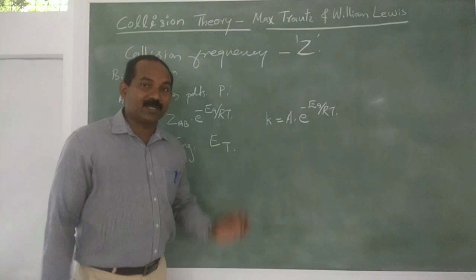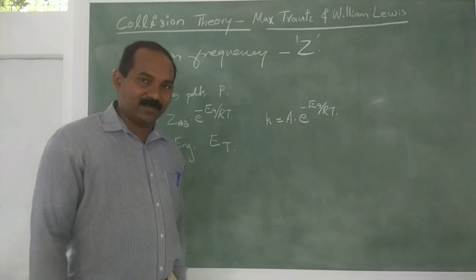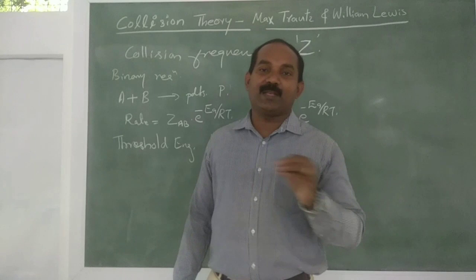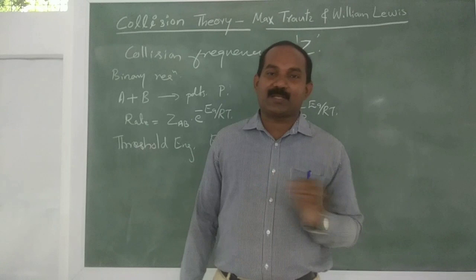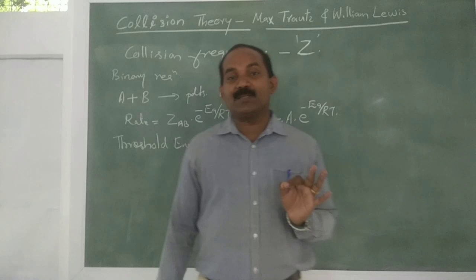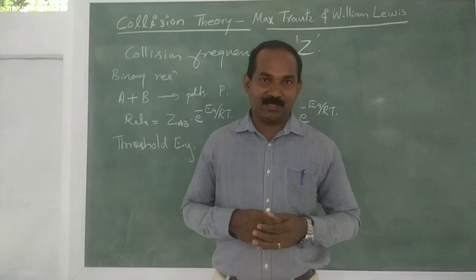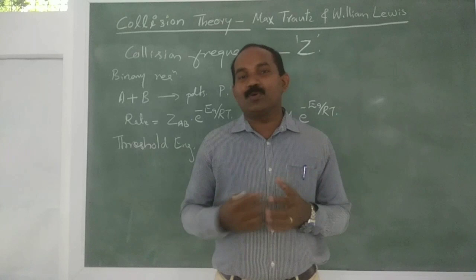Referring back to the potential energy diagram, ET is the threshold energy, ER is the energy of reactants. Another important feature of collision theory is proper orientation. Proper orientation leads to a chemical reaction; improper orientation does not give any products — the molecules just collide and bounce back. The proper orientation factor P is also known as the probability factor or steric factor.